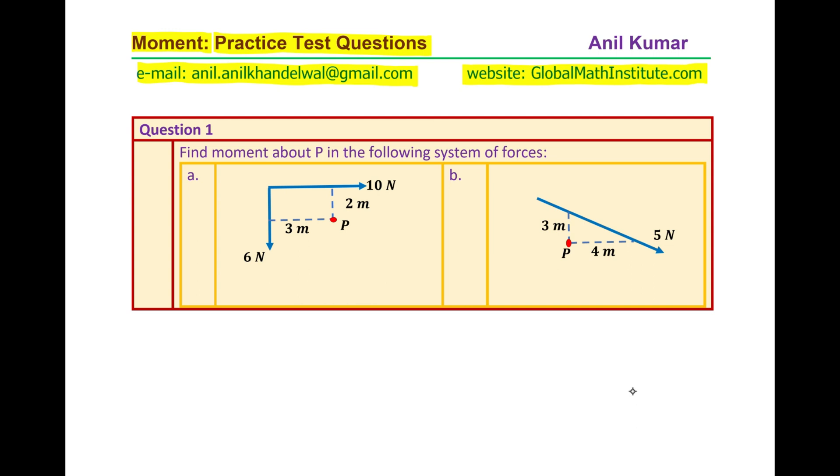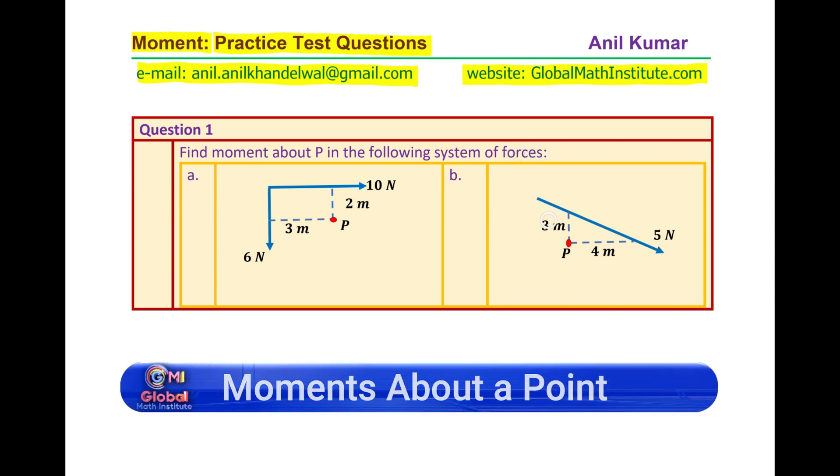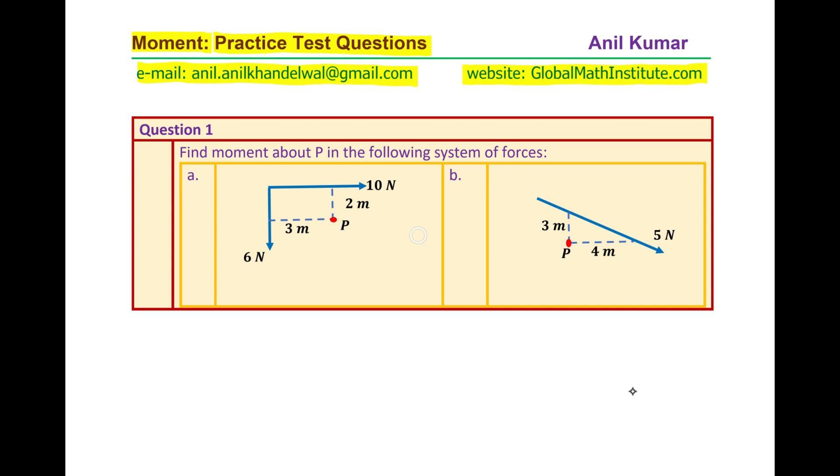The first question has two parts. Find moment about P in the following system of forces. We are given two systems where point P is shown with the red dot and the forces are shown in these blue lines.